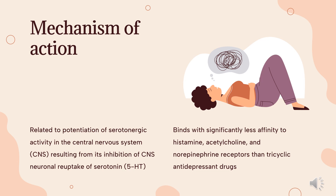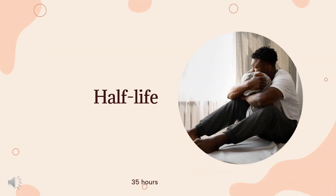Particularly, citalopram has no, or very low affinity, for 5-HT1A, 5-HT2A, dopamine D1 and D2, alpha-1, alpha-2, and beta-adrenergic, histamine H1, gamma-aminobutyric acid (GABA), muscarinic cholinergic, and benzodiazepine receptors. Half-life: The mean terminal half-life of citalopram is about 35 hours.